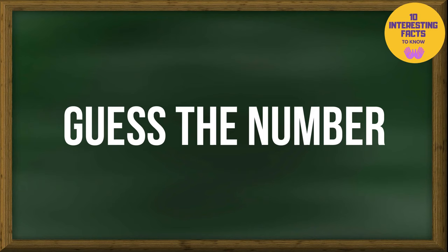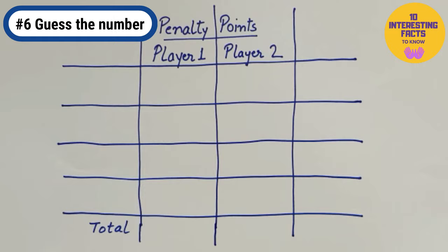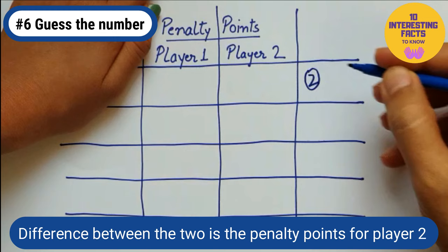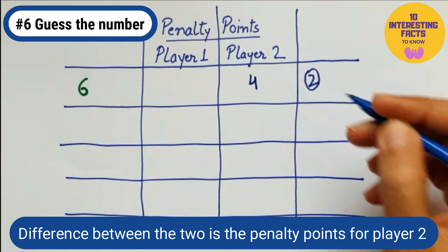Guess the number. Two players can play this game. Player one secretly writes a number between one and ten. Player two guesses that number. The difference between the two is the penalty points for player two. Player one wrote number six and player two guessed it as two.